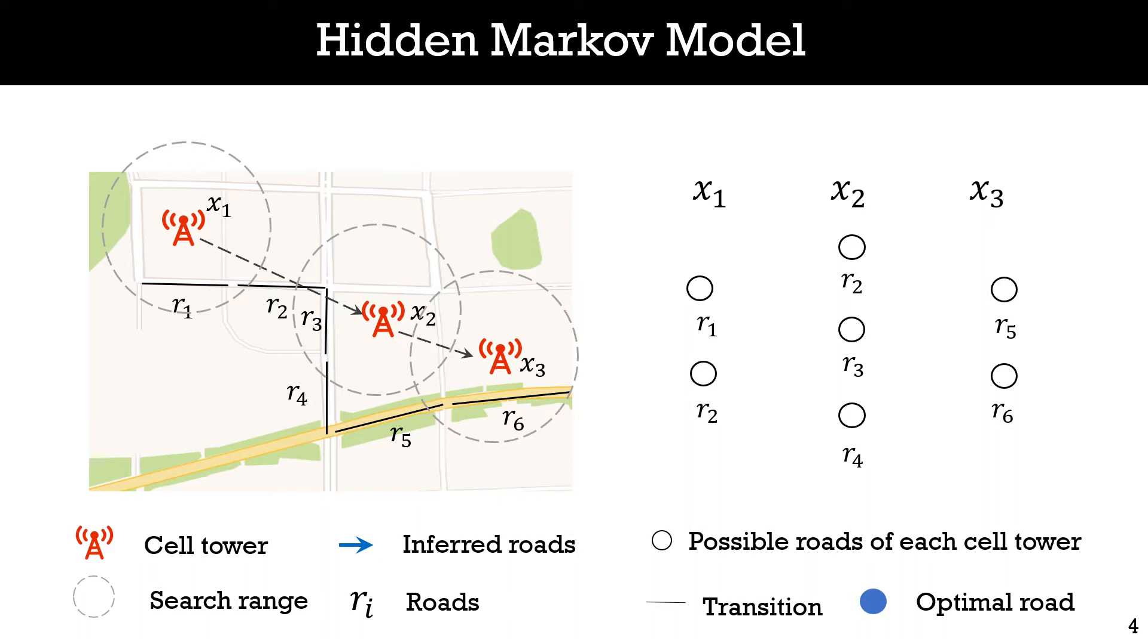For these roads, hidden Markov models usually estimate an observation probability and a transition probability. The observation probability estimates the likelihood of the cell tower being localized at the road, according to the distance between the road and cell tower. The transition probability evaluates the likelihood of transit from the last road or the last several roads to the current road. According to different numbers of historical roads, the hidden Markov model can be divided into different orders. For example, if we consider the last one road, the model is first order. If we consider the last two roads, the model will be second order.